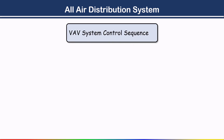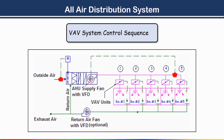The VAV system control sequence shows how air flow rate is controlled. The AHU contains a supply air fan connected to a variable frequency drive. A single duct supplies conditioned air to five rooms, each fitted with a VAV box. A pressure differential sensor is also installed in the supply duct line.